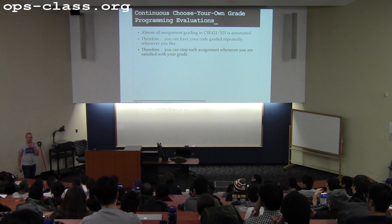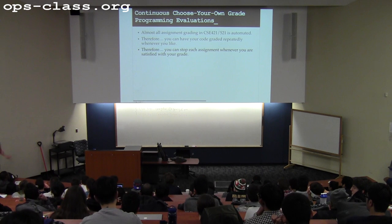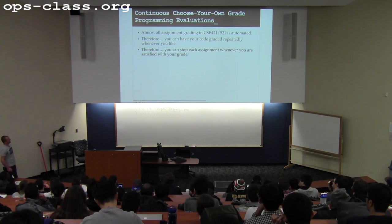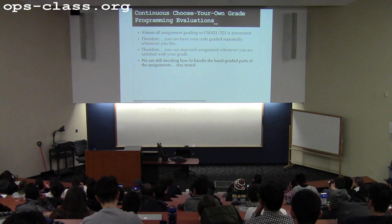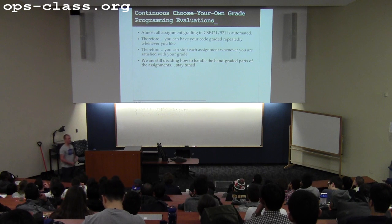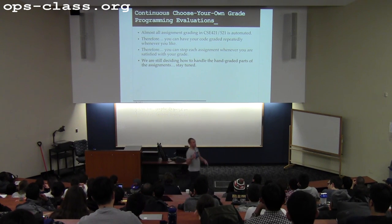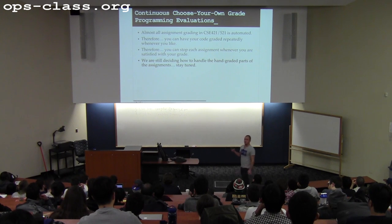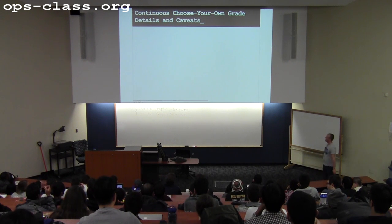The grading for this class we try to make as transparent as possible — you should know the grade you're getting on each assignment. That also tends to cut down a lot on arguments about grades. The hand-graded parts of the assignment — I'm not exactly sure what we're going to do about that this year, but we'll let you know. In the past, those could only be submitted once because we actually have to have a human being grade them, but we may try to automate some of that as well.